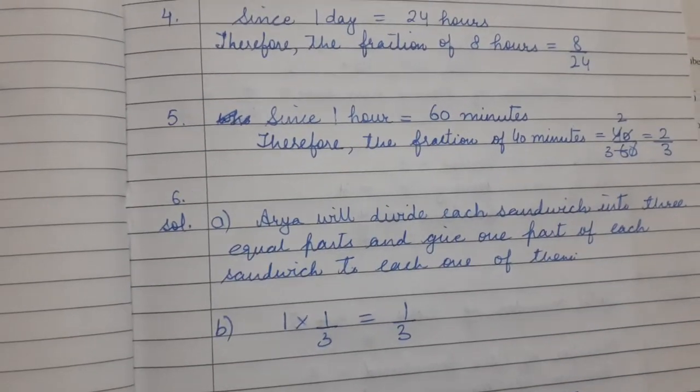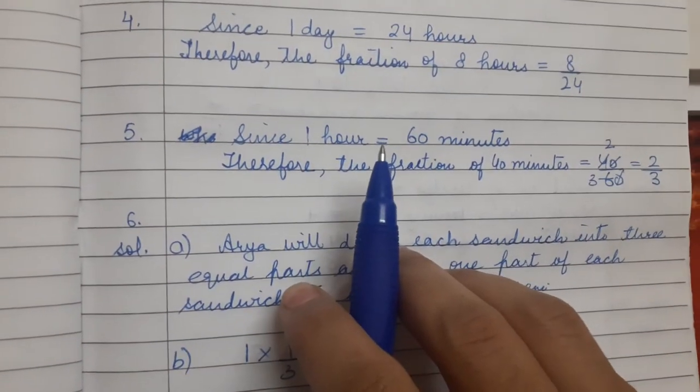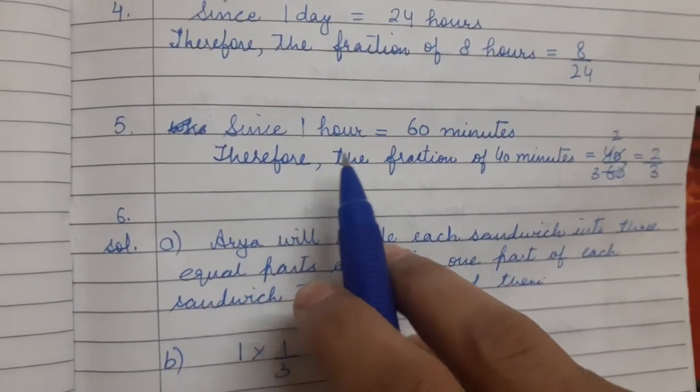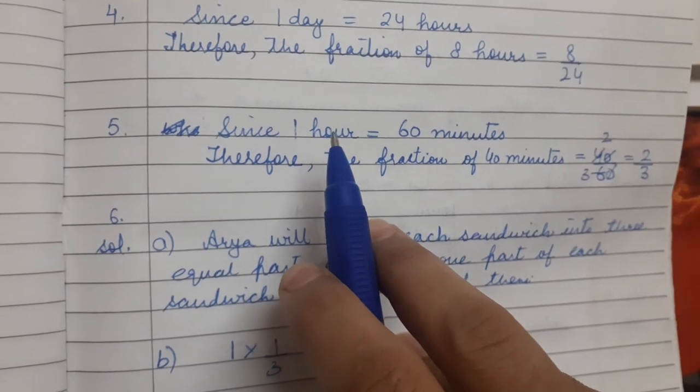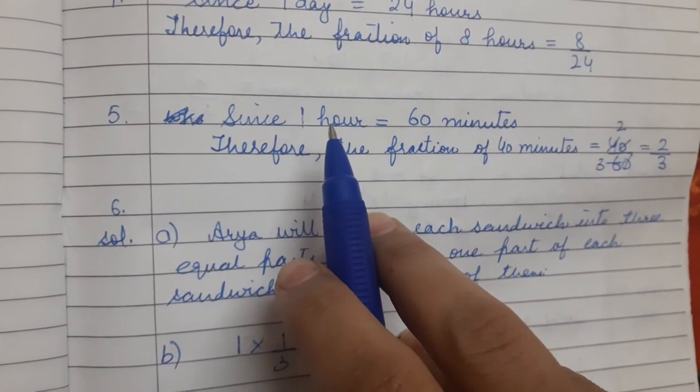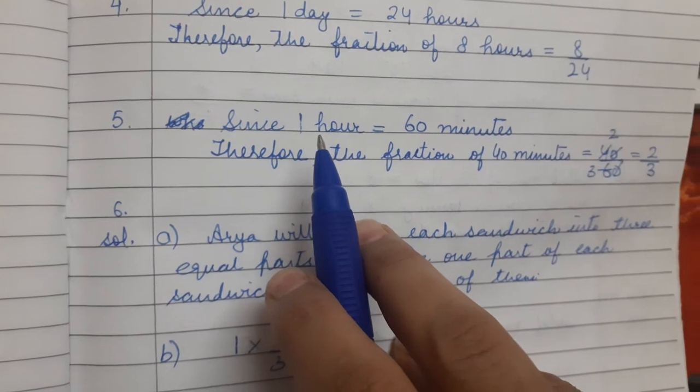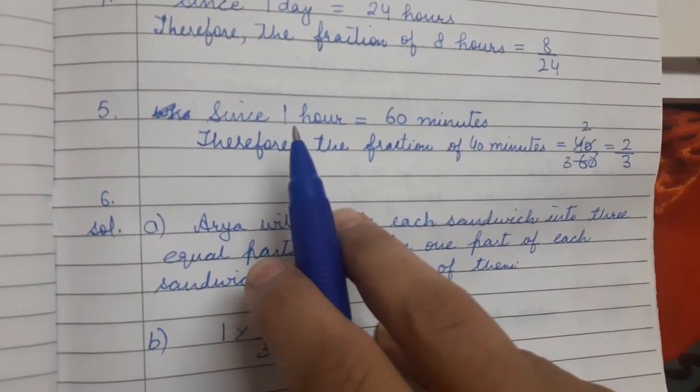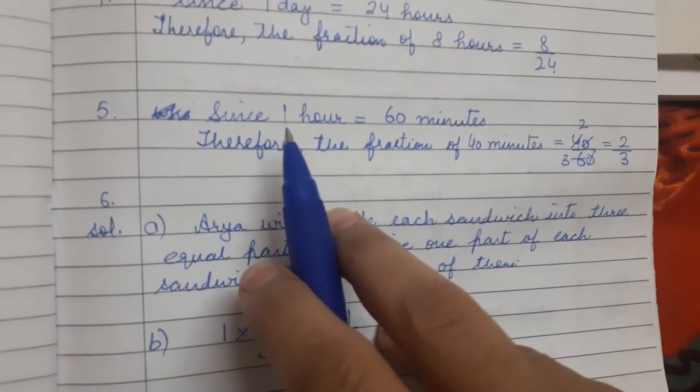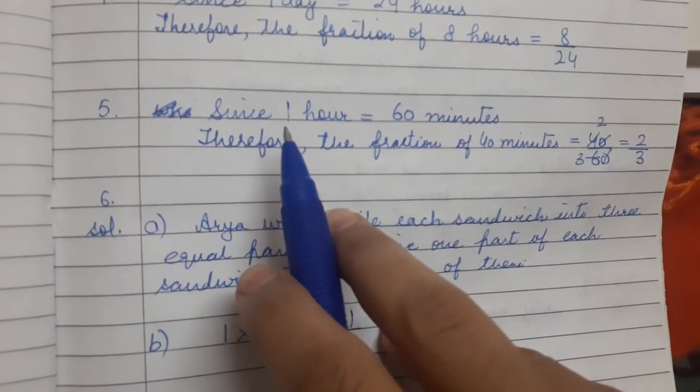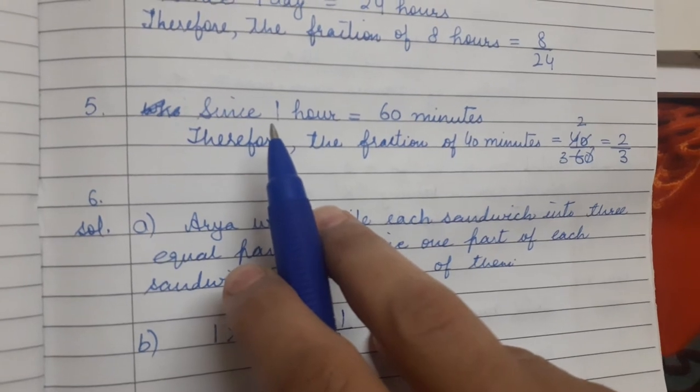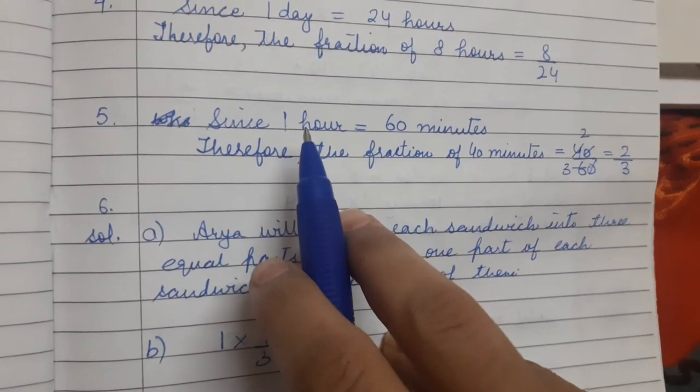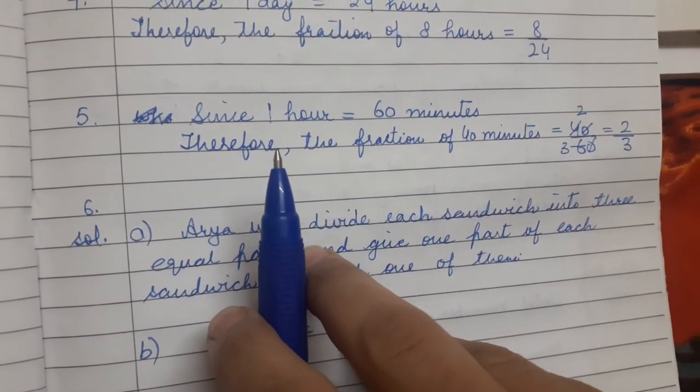Sixth question. In question number 6, the question is: Arya, Abhimanyu and Vivek shared lunch. Arya has 2 sandwiches, one made of vegetable and one of jam. The other 2 boys forgot to bring their lunch. Arya agreed to share his sandwiches so that each person will have an equal share of each sandwich. So how many parts should each sandwich be divided? 3 parts, because they are 3 kids.